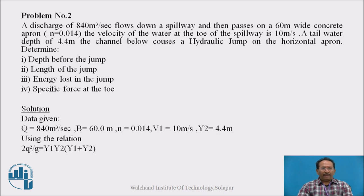Now we will see the second problem. A discharge of 840 meter cube per second flows down a spillway and then passes on a 60 meter wide concrete apron. In bracket n is given to us, that is 0.014. The velocity of the water at the toe of spillway is 10 meter per second. A tail water depth of 4.4 meter. The channel below causes a hydraulic jump on the horizontal apron. Determine depth before the jump, length of the jump, energy lost in the jump, and specific force at the toe.